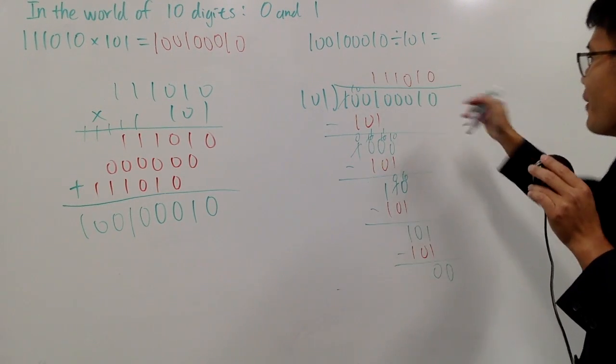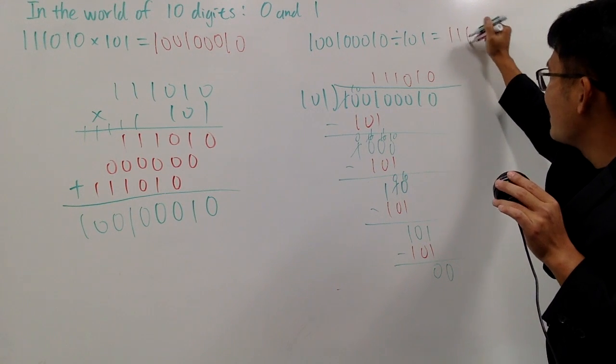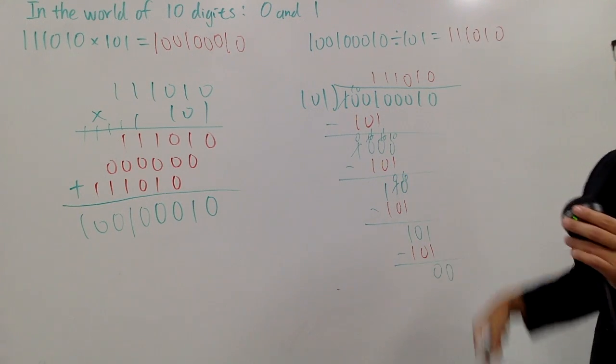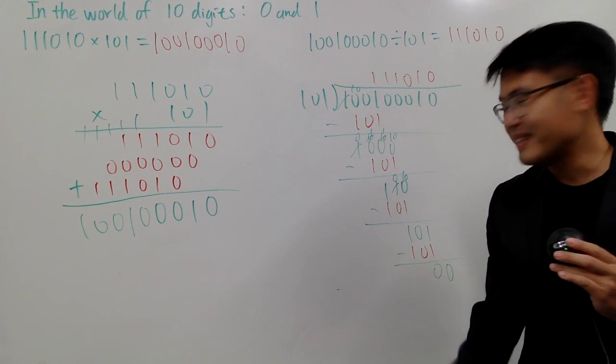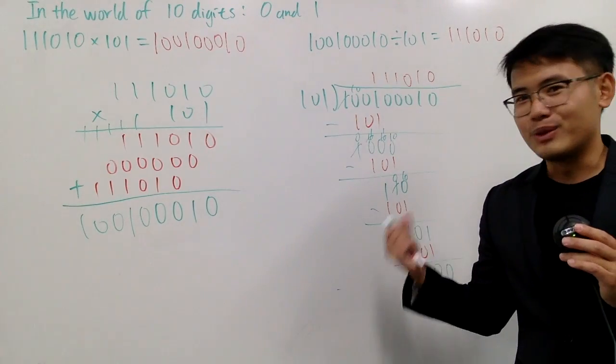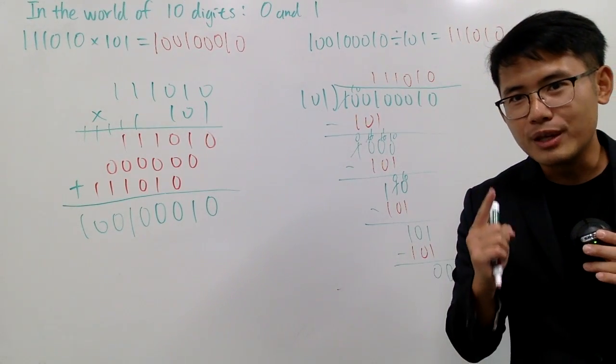Because the remainder is 0. So the answer is 1, 1, 1, 0, 1, 0. How cool is this? How easy is this? Right? Well, leave a comment down below. Let me know what you guys think. And next, we will gain two decimals.